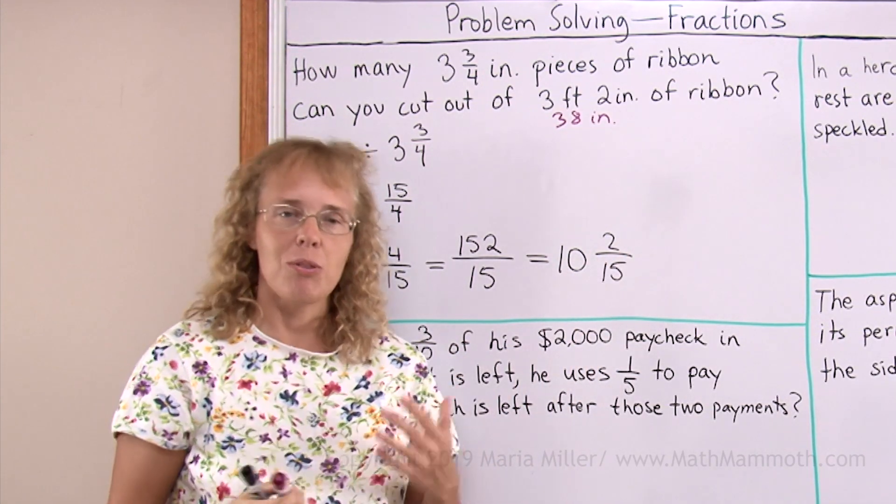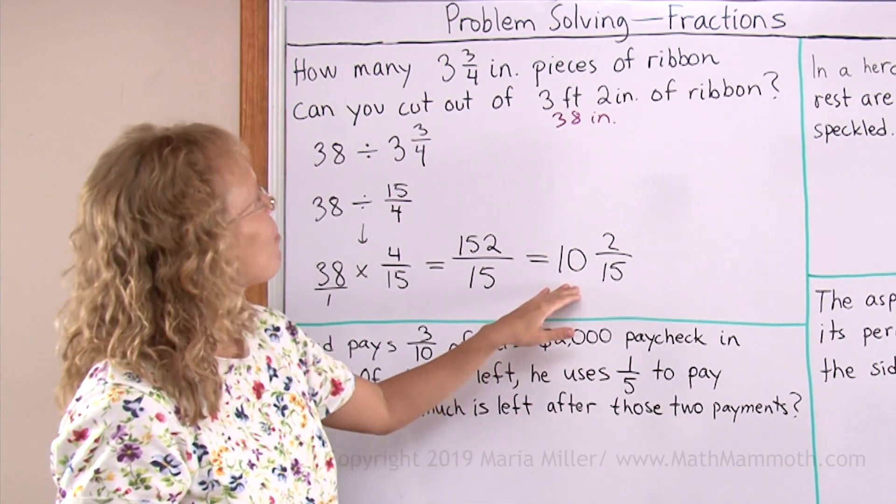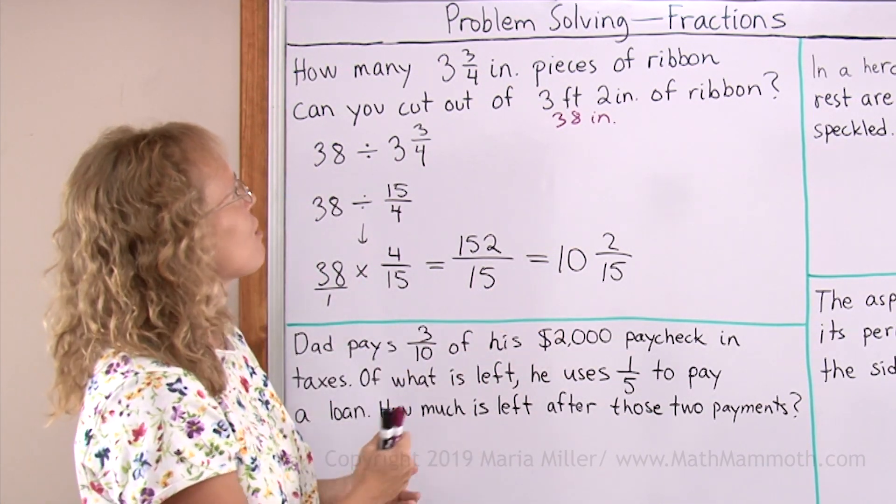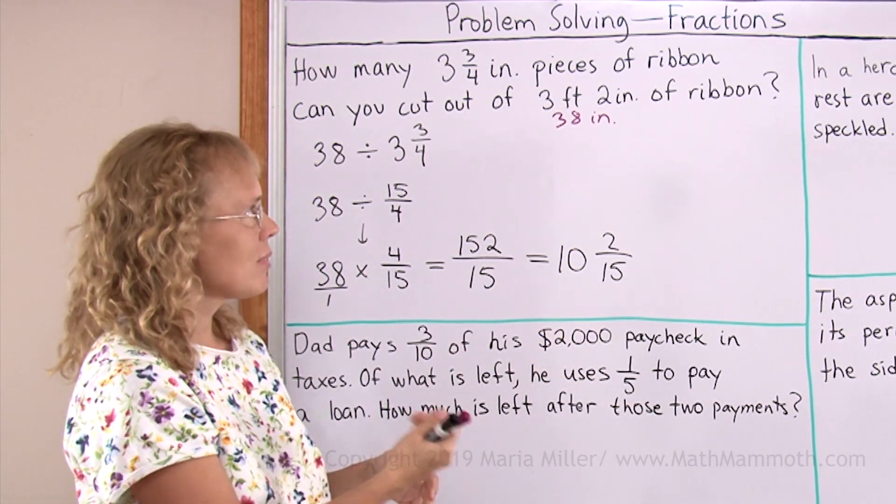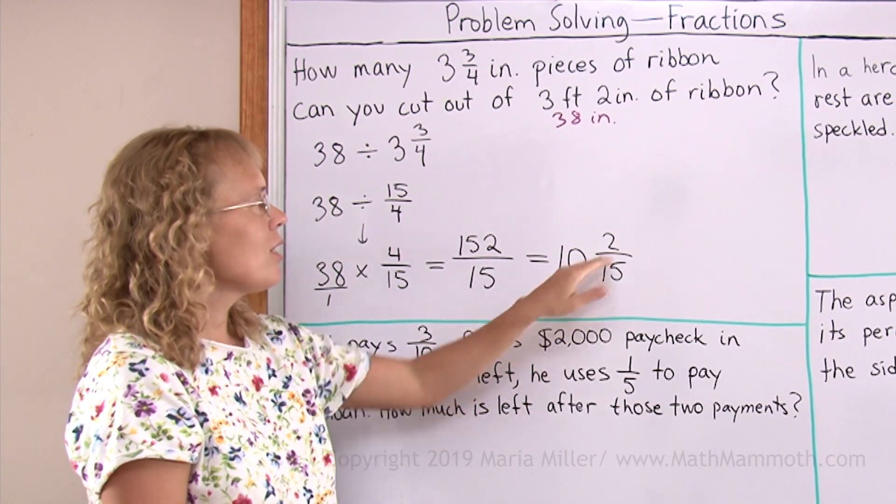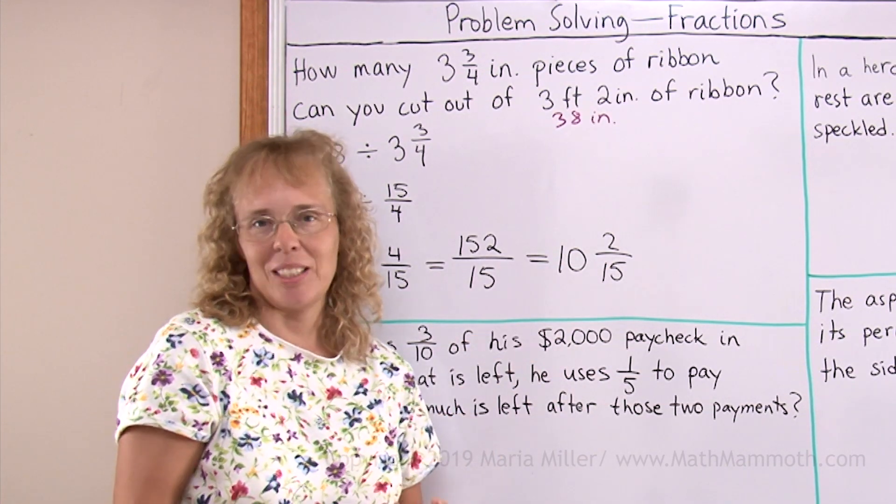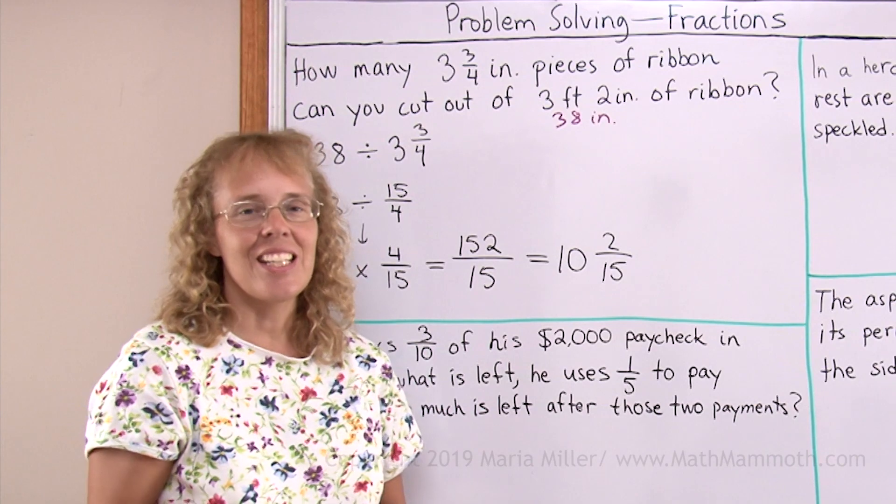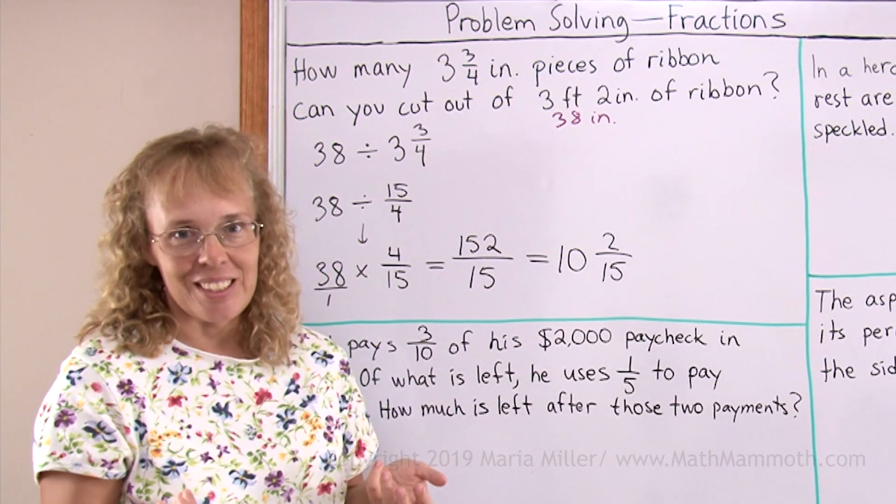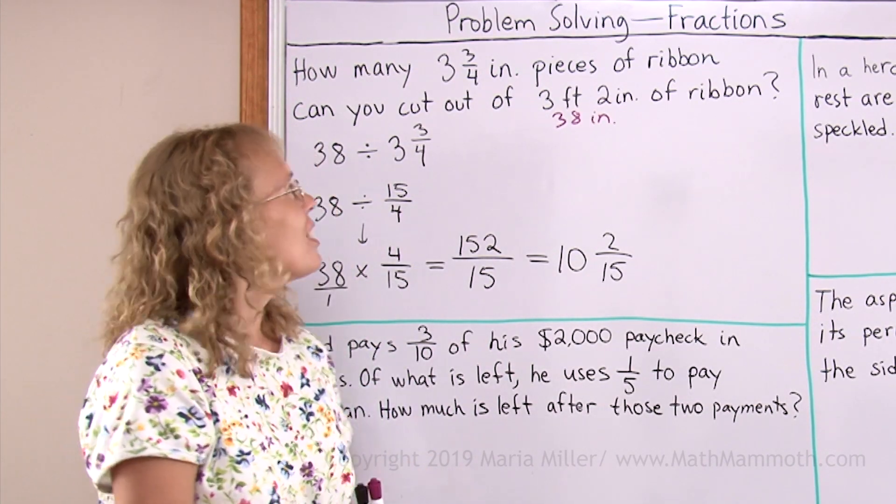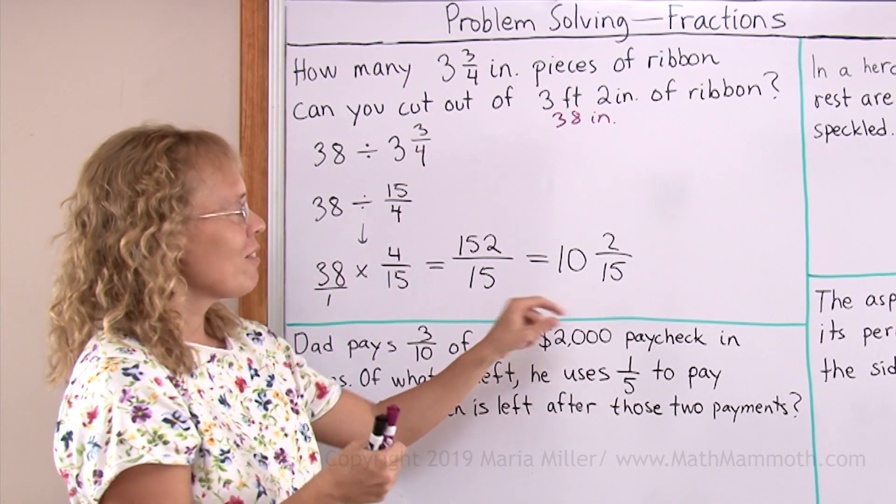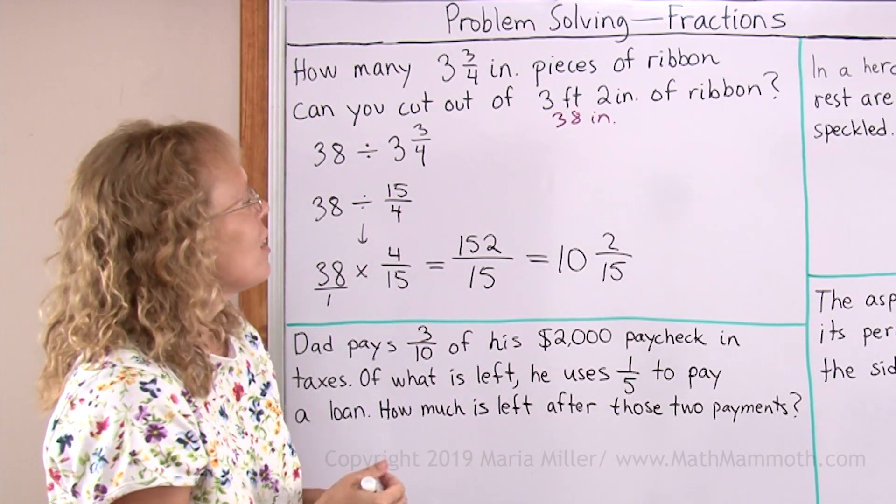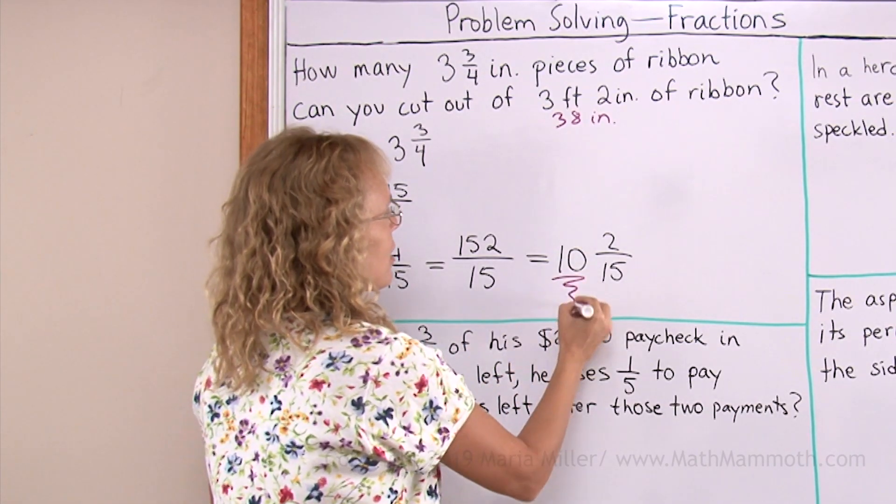Now we need to just figure out what's our final answer. Is it this one? It says, how many pieces of ribbon can I cut out of that? Well, you can cut 10 and 2/15ths pieces. But that doesn't make sense. You just have to answer as 10 pieces. You can cut 10 pieces of ribbon of that size and then you have a teeny piece left over. But the answer is actually just 10 pieces.